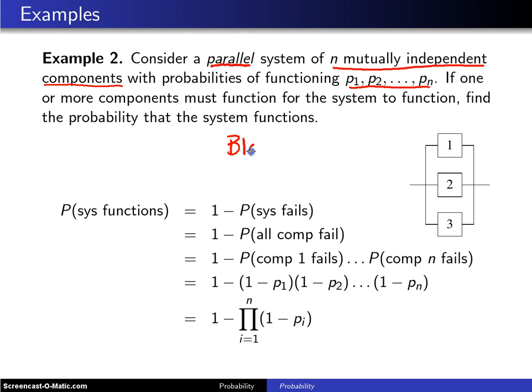Well off to the right here you have another block diagram and this block diagram corresponds to N equals three components. The first one has a probability of functioning P1, second component has a probability of functioning P2, and the third component has a probability of functioning P3.